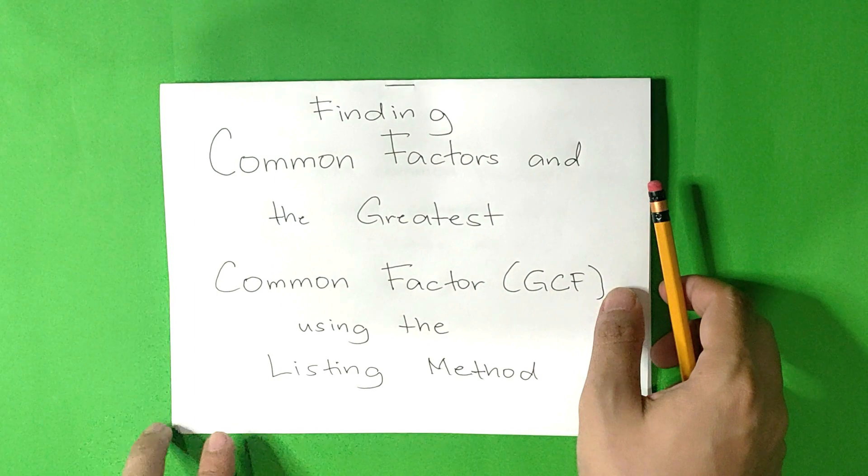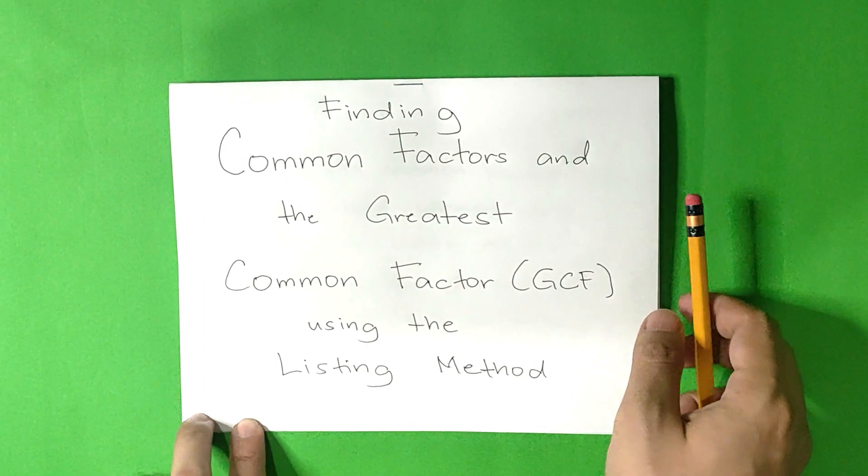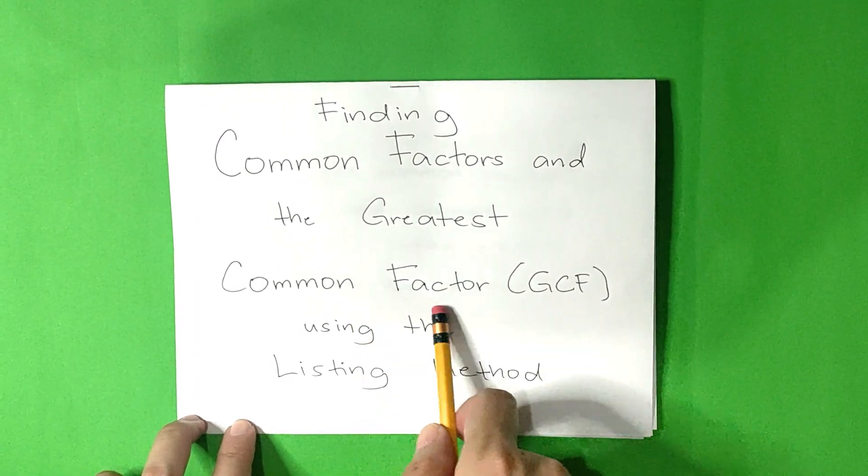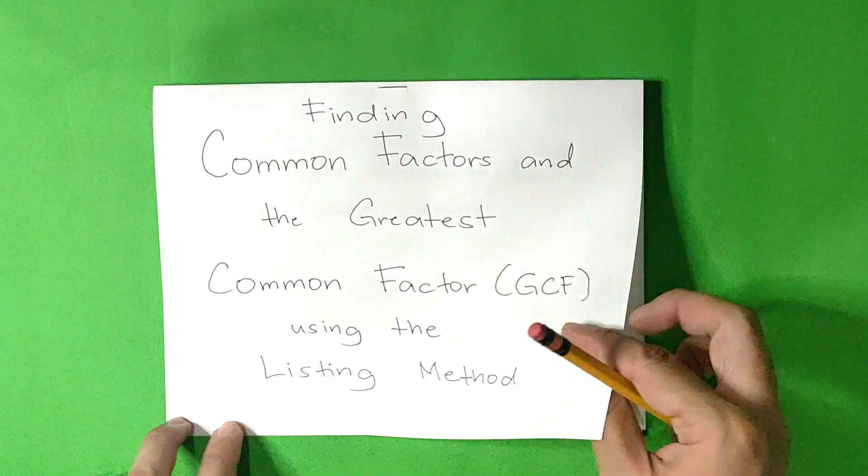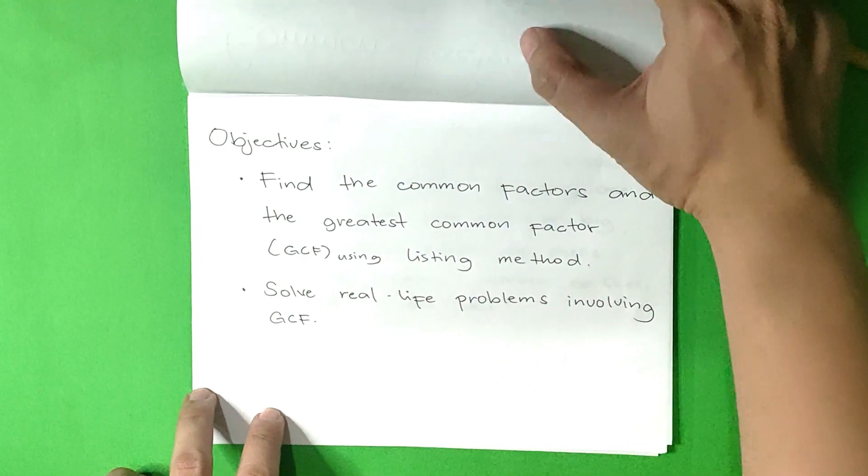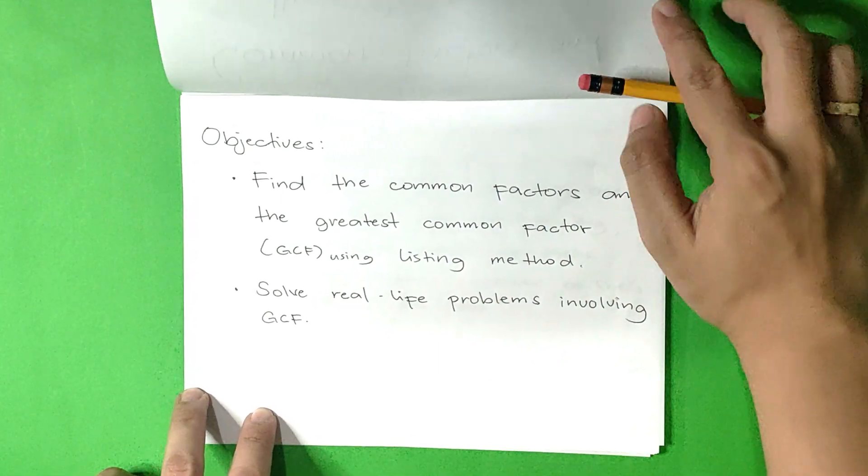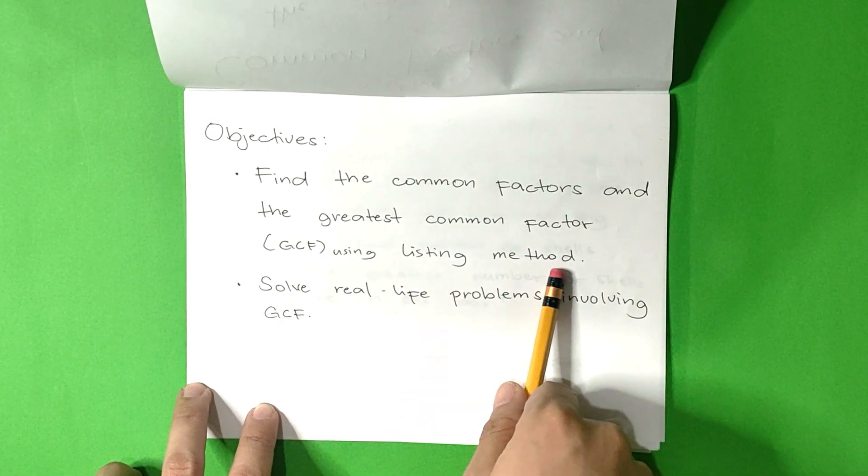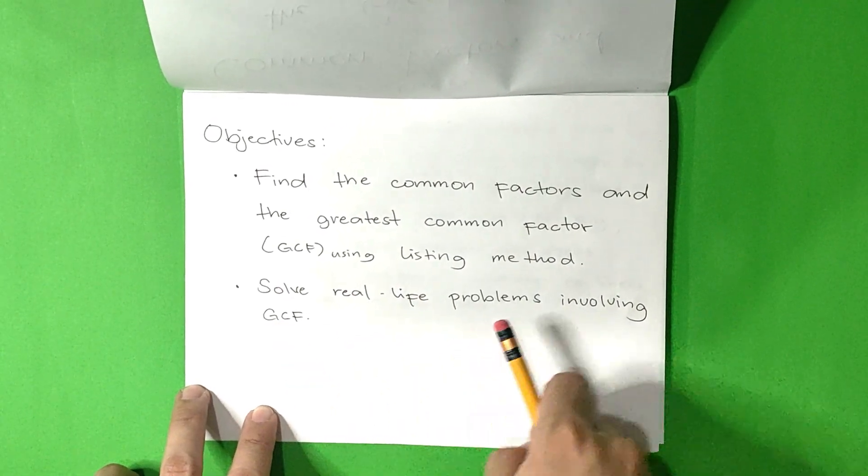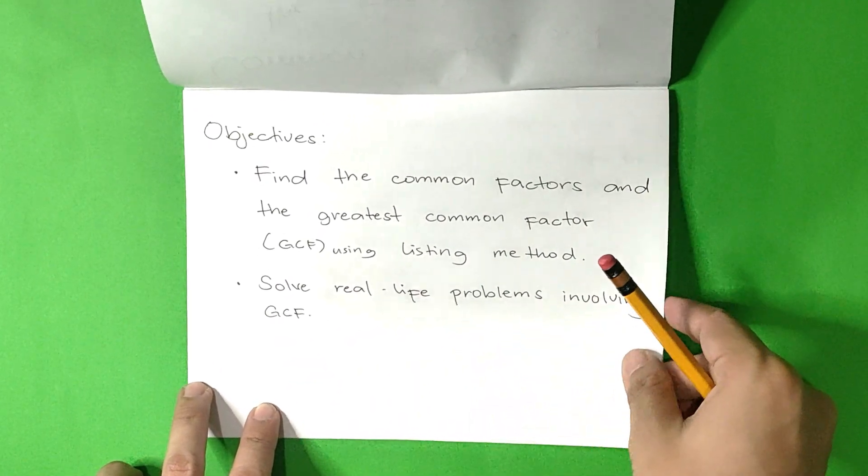Our lesson is about finding common factors and the greatest common factor or GCF using the listing method. Our objectives are to find the common factors and the greatest common factor using listing method and solve real-life problems involving GCF.